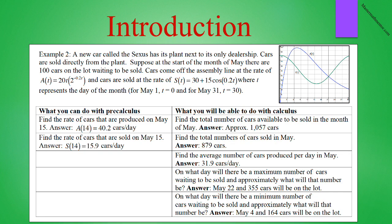With calculus, we can answer many more questions. For instance, we can find the total number of cars available to be sold in the month of May. The answer is approximately 1,057 cars. We can find the total number of cars sold in May. The answer is 879 cars. We can find the average number of cars produced per day in May. And the answer is 31.9 cars a day. We can find the day when there will be a maximum number of cars waiting to be sold and approximately what that number is. And the answer is on May 22nd, there will be 355 cars on the lot. And we can find out the day when there is a minimum number of cars waiting to be sold and approximately what that number is. And the answer is on May 4th, there will be 164 cars on the lot.